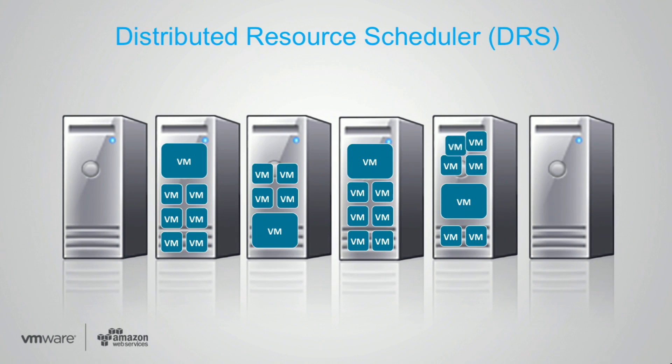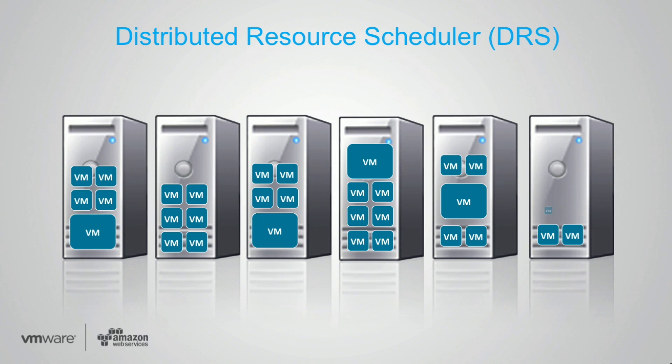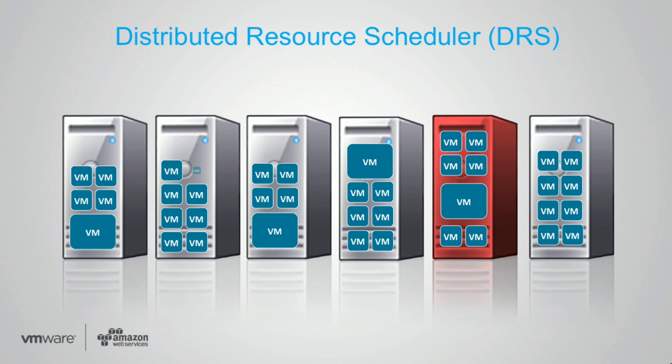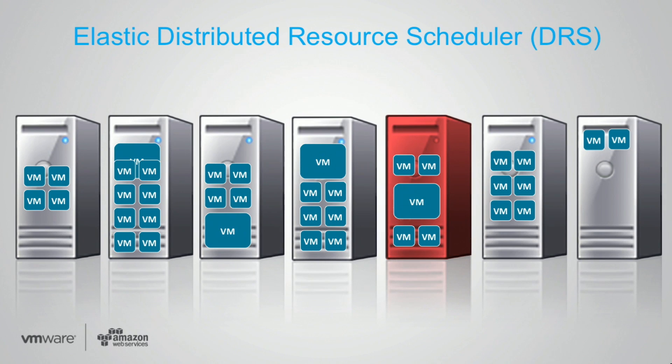Another great vSphere feature is DRS — Distributed Resource Scheduler — which automatically rebalances workloads across the cluster of servers to optimize performance and utilization. But what happens when we run out of capacity? We've created a net-new capability called Elastic DRS, a technology preview that takes advantage of the elastic AWS infrastructure underneath. When the server is overloaded, Elastic DRS automatically spins up a new server and DRS kicks in to rebalance those workloads — something that used to take weeks or a month in a traditional on-prem environment now takes a few minutes on the AWS cloud.